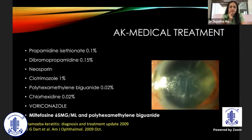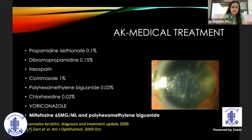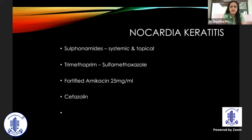For acanthamoeba keratitis — a condition where the patient has more symptoms than signs — the patient typically has radial keratoneuritis. Two groups of drugs are commonly used: the diamidines and biguanides. Of these, PHMB (polyhexamethylene biguanide) has shown the maximum response. In recent years, voriconazole has shown excellent results. Miltefosine is also a new agent showing very good response along with PHMB.